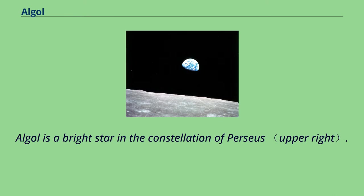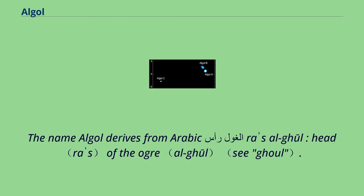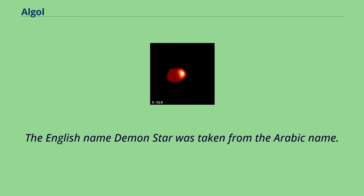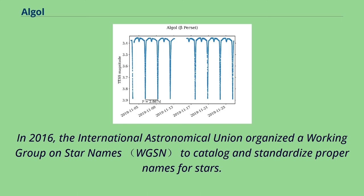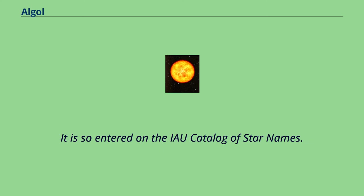Algol is a bright star in the constellation of Perseus. Beta Persei is the star's Bayer designation. The name Algol derives from Arabic Ra's al-Ghul, head of the Ogre. The English name Demon Star was taken from the Arabic name. In 2016, the International Astronomical Union organized a working group on star names to catalog and standardize proper names for stars. The WGSN's first bulletin of July 2016 included a table of the first two batches of names approved by the WGSN, which included Algol for this star. It is so entered on the IAU catalog of star names.